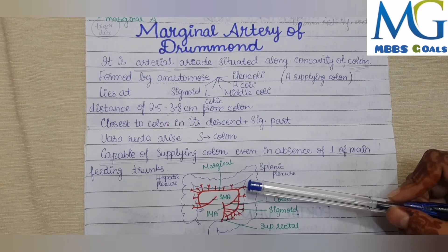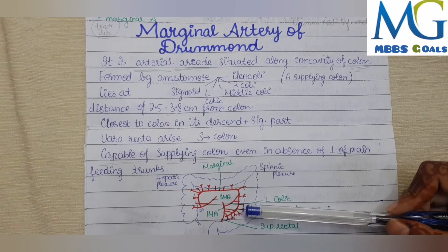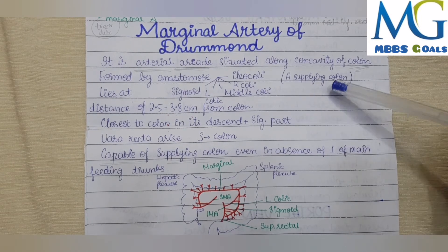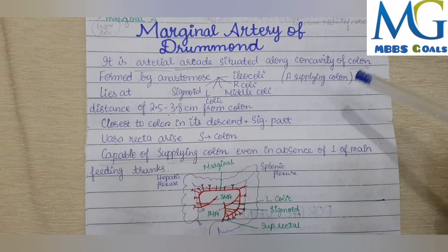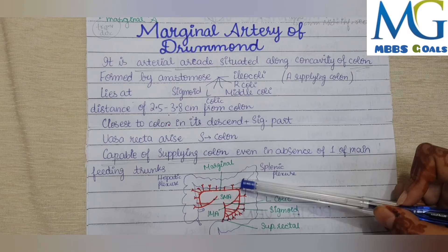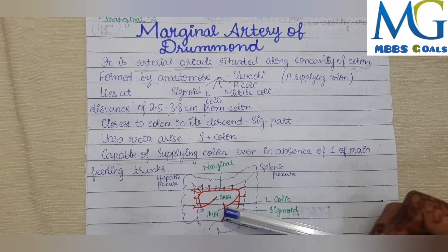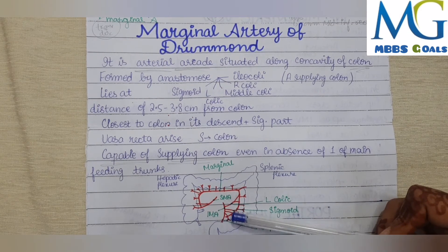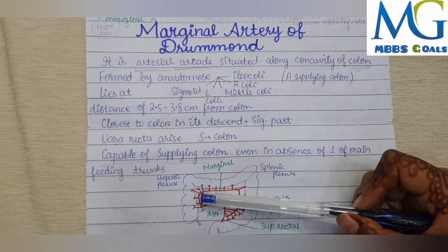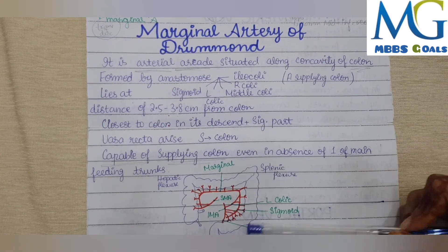The marginal artery is especially important in the descending and sigmoidal parts of the colon. If the main trunk of the inferior mesenteric artery is compromised, the marginal artery provides collateral supply. It is formed by anastomoses between the right colic, middle colic, left colic, and sigmoidal colic arteries.